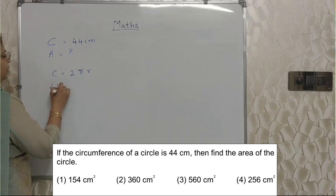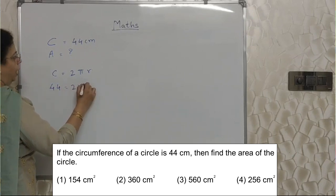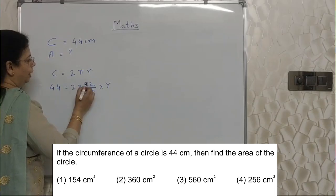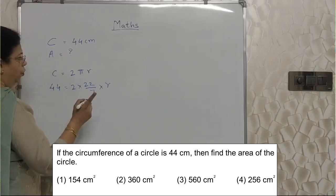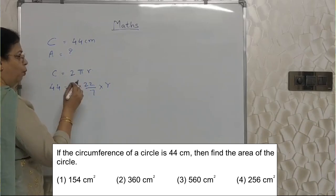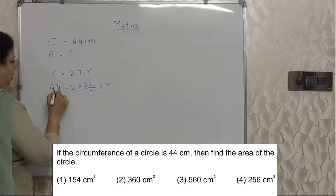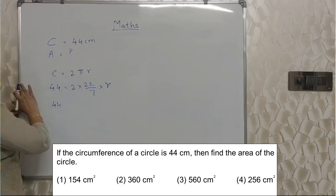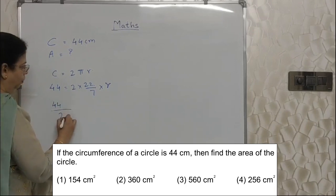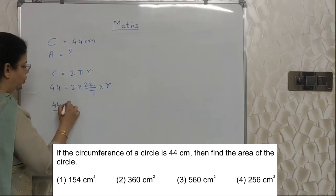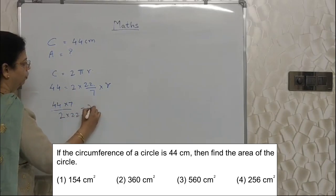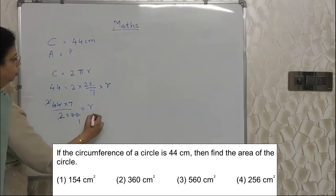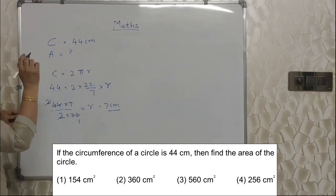C equals 44, and 2 pi r means 2 times 22 over 7 times r. I am not going to multiply — don't waste time. When we are going to divide, why multiply? My intention is to leave r alone. So this 2 goes down, and 22 upon 7 becomes its reciprocal — 7 goes up and 22 comes down. So r equals 44 times 7 divided by 2 times 22. 22 twos are 44, so r equals 7 centimetres.